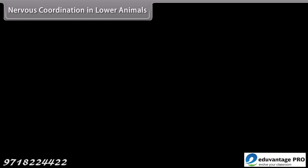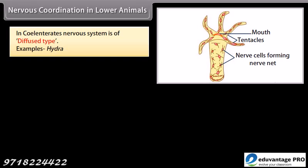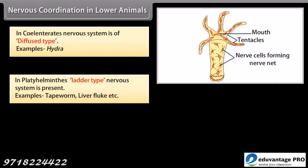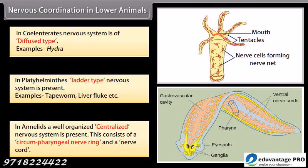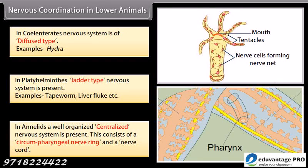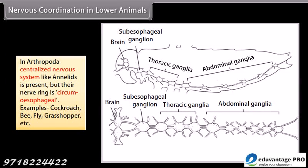In coelenterates, the nervous system is of diffused type — example: Hydra. In platyhelminthes, a ladder-type nervous system is present — examples: tapeworm, liver fluke, etc. In annelids, a well-organized centralized nervous system is present, consisting of a circumpharyngeal nerve ring and a nerve cord. In arthropoda, a centralized nervous system like annelids is present, but their nerve ring is circumesophageal.